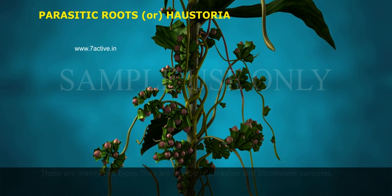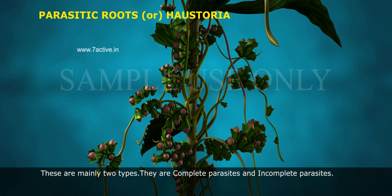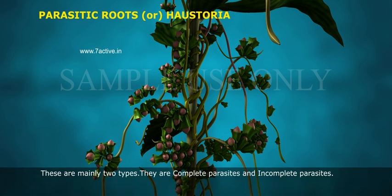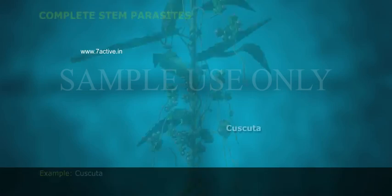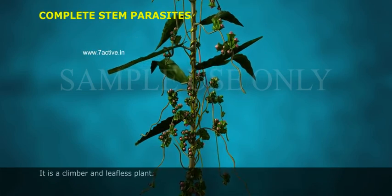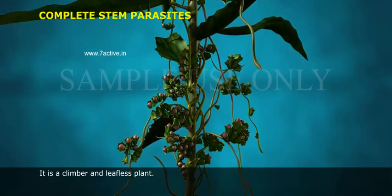There are mainly two types: complete parasites and incomplete parasites. An example of a complete parasite is Cuscuta, which is a climber and leafless plant.